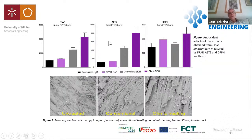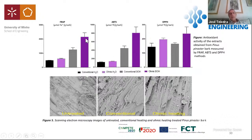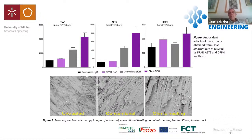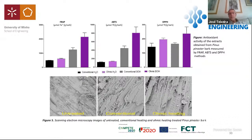Using techniques to evaluate antioxidant activity, these techniques are based on different principles, so results are slightly different when comparing across all approaches. However, using ohmic heating with ethanol presents the most efficient data and the most interesting results. We can also see significant changes in the structure of the material when processed by ohmic heating, and as expected, the phenolic profile is changed when you apply ohmic heating, either in water or in an aqueous ethanol solution.